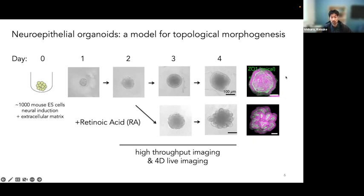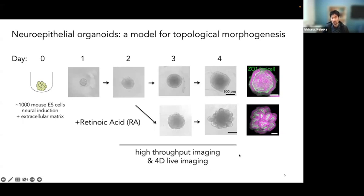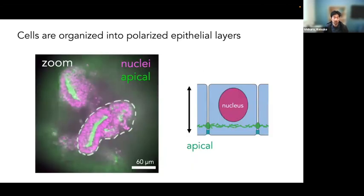This staining shows ZO1, which is an apical membrane marker. In this in vitro system, we can add different chemical cues. What I found was that retinoic acid, which acts as a morphogen in many developmental contexts, when applied at day two led to a striking morphology at day four — as shown in the lower panel. The overall tissue, which was round in the control condition, basically looks like a bunch of grapes. This was a really striking phenotype, leading me to ask how we can understand the self-organization of this process.